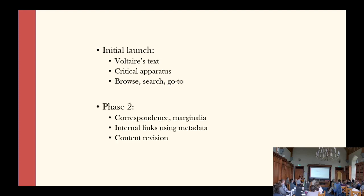Because of the complexity of what we want to develop, the resource is being developed in phases with multiple planned releases. In phase two, we will add the correspondence and the marginalia, some metadata linking, some first content updates, and so on. In addition to this archival material, we are constructing a set of resources under the heading of Voltaire's Studio. Whatever the financial model ultimately adopted for Digital Voltaire, the studio will remain open access.